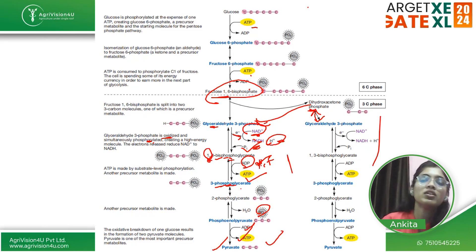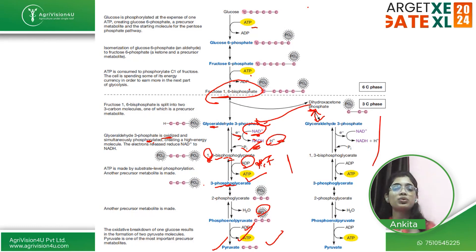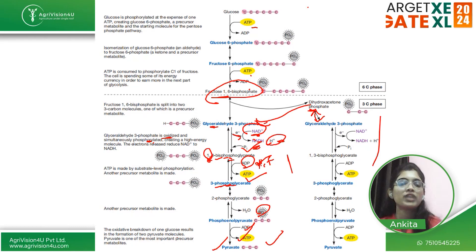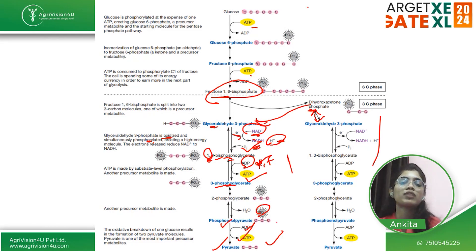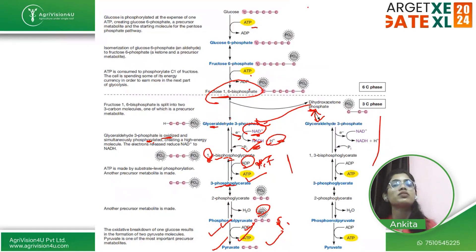This step — H₂O removal — is important to remember. Suppose in the exam you have a question like: in which step of glycolysis is H₂O removed, or what do you get after removing the water molecule in glycolysis? The answer is phosphoenolpyruvate — when you remove H₂O from 2-phosphoglycerate. After that, phosphoenolpyruvate with ADP releases the phosphate, giving you pyruvate at the end. This is the whole procedure of glycolysis, and you should know it — it is very, very important.